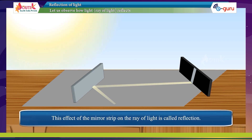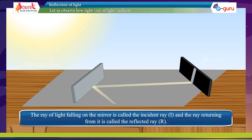This effect of the mirror strip on the ray of light is called reflection. The ray of light falling on the mirror is called the incident ray, I, and the ray returning from it is called the reflected ray, R.